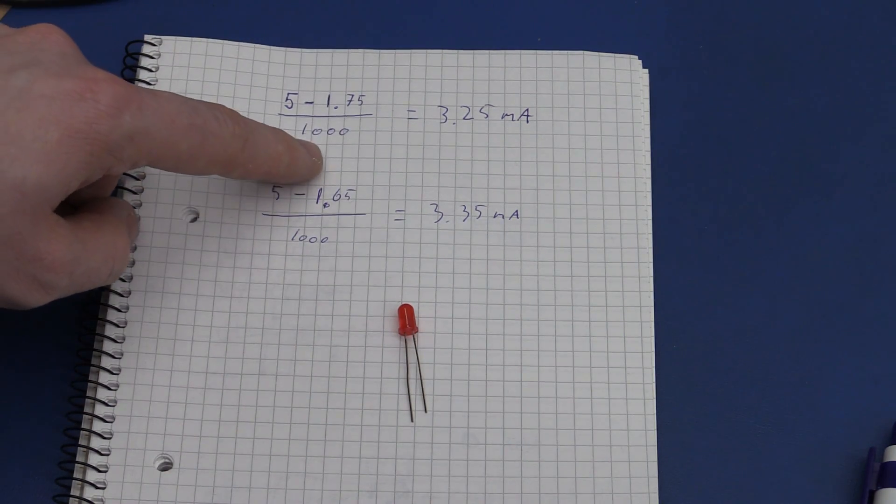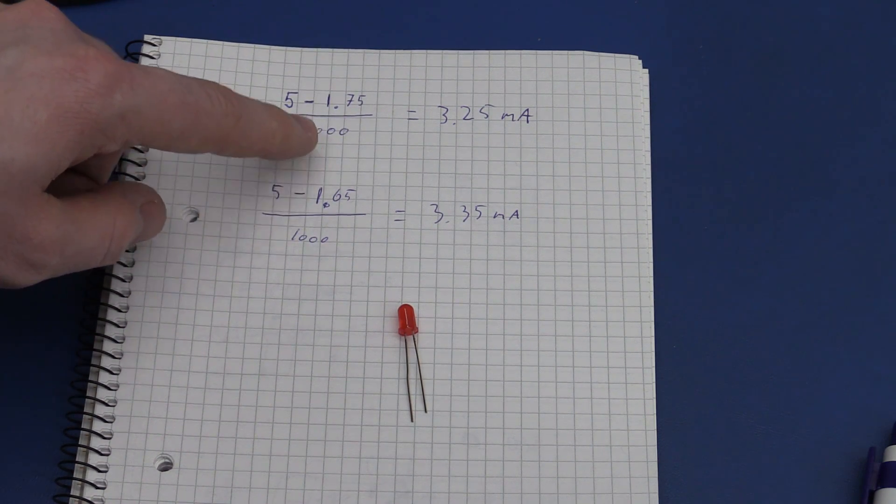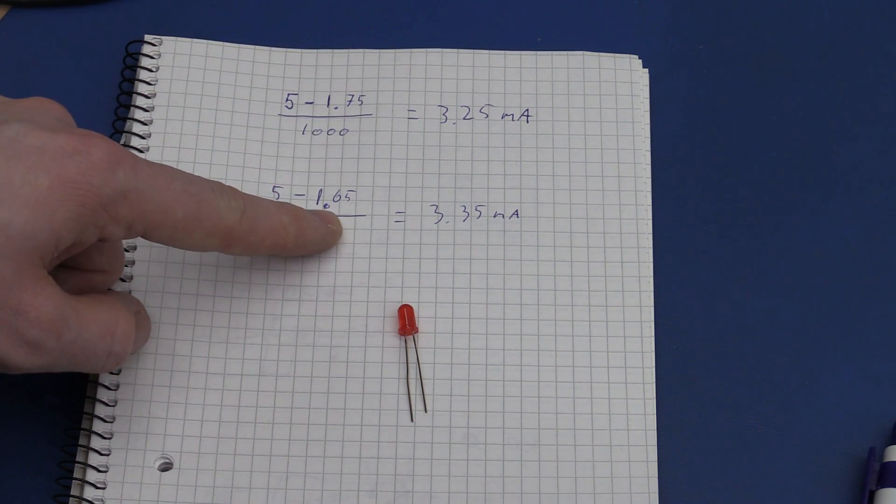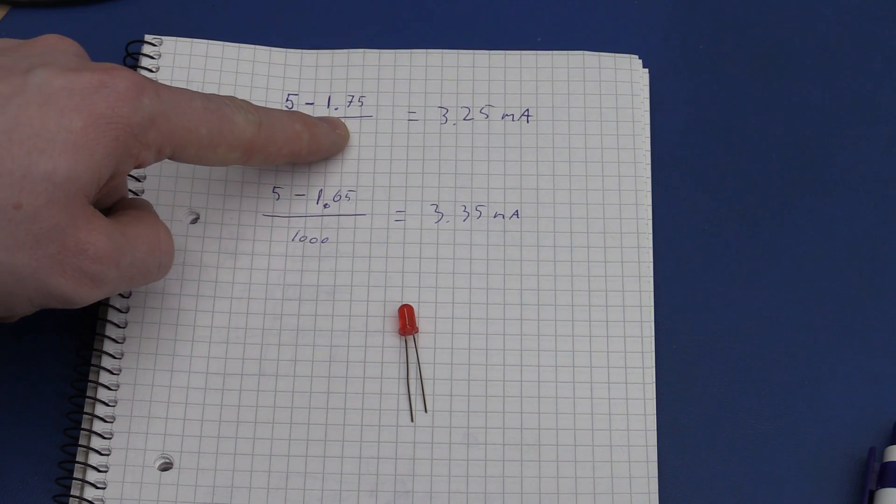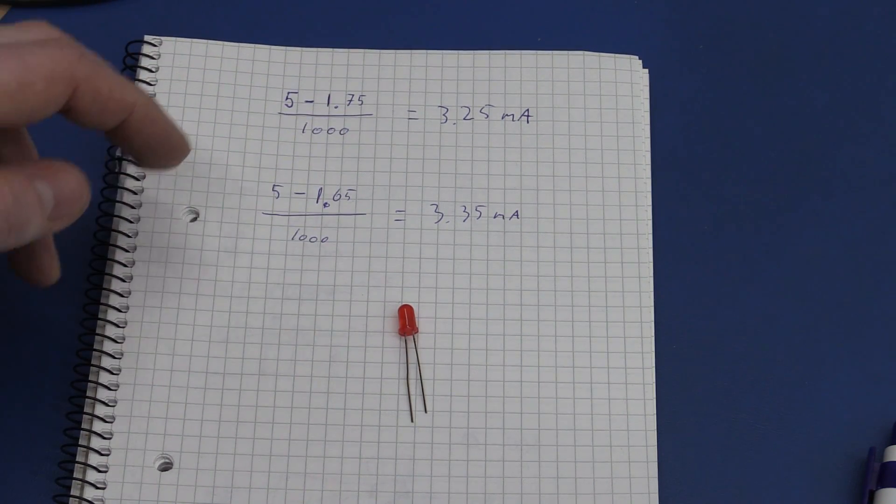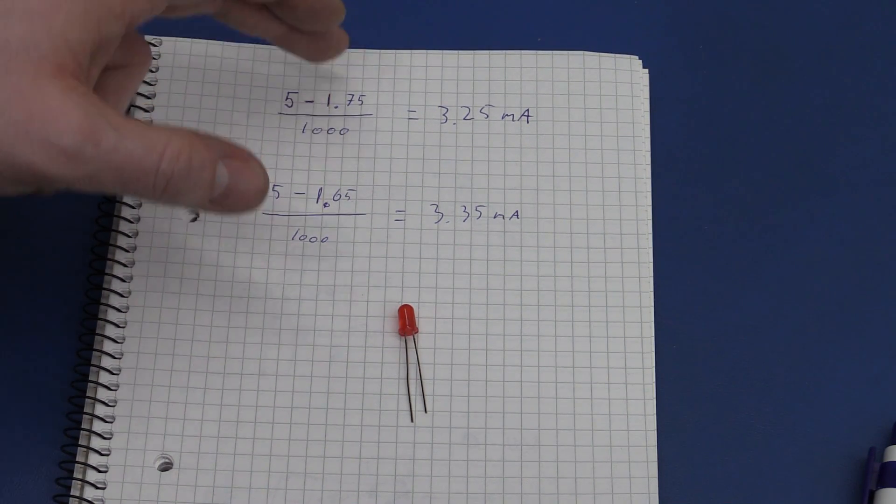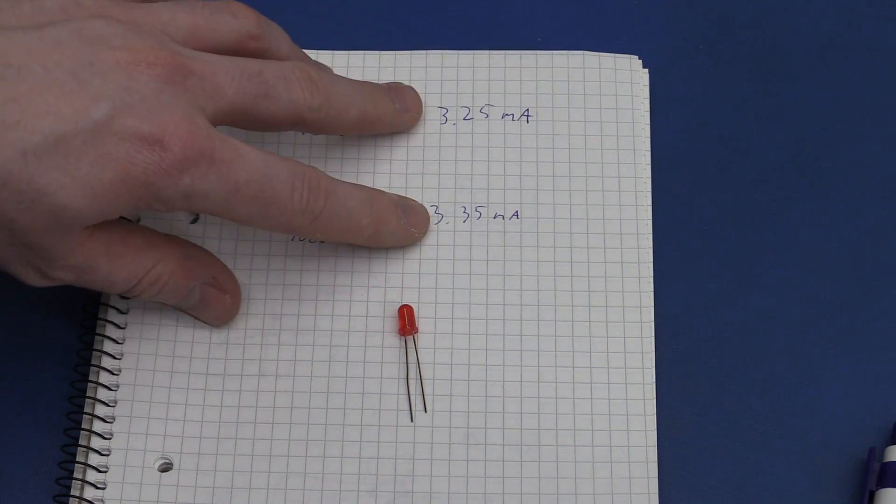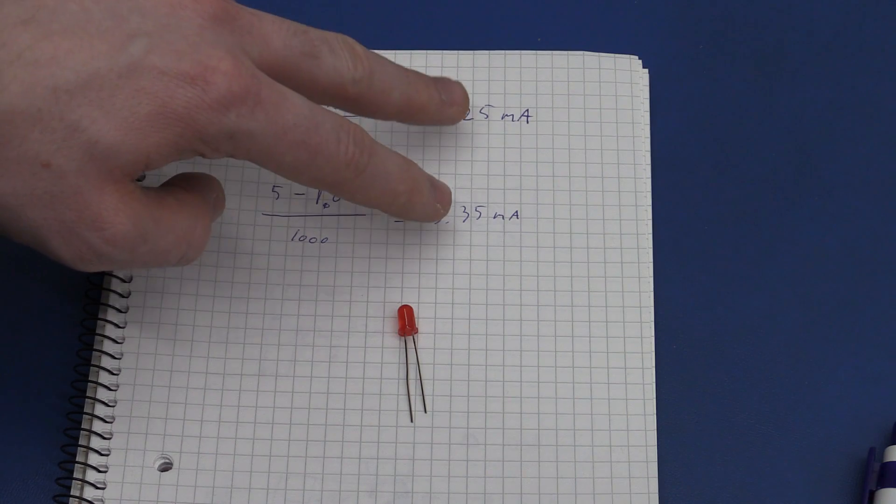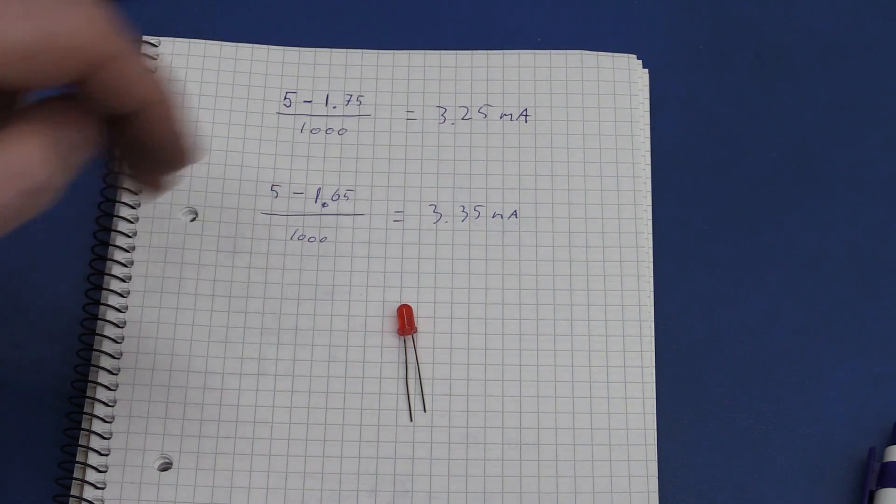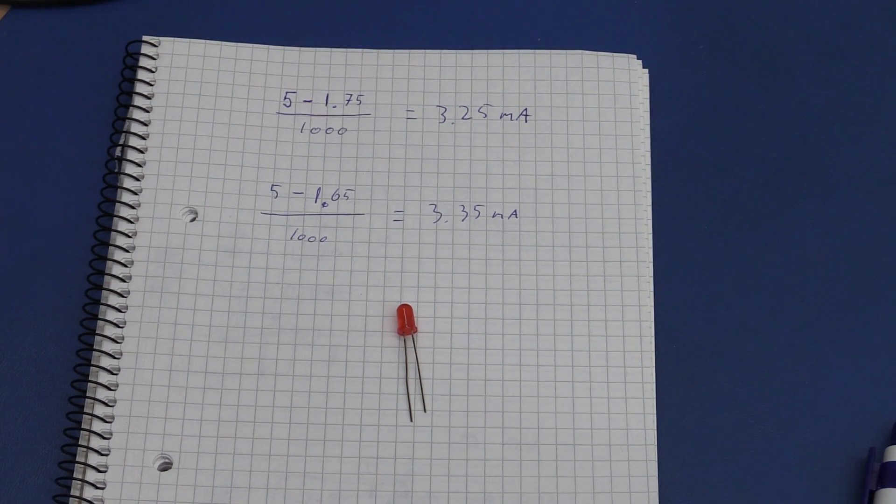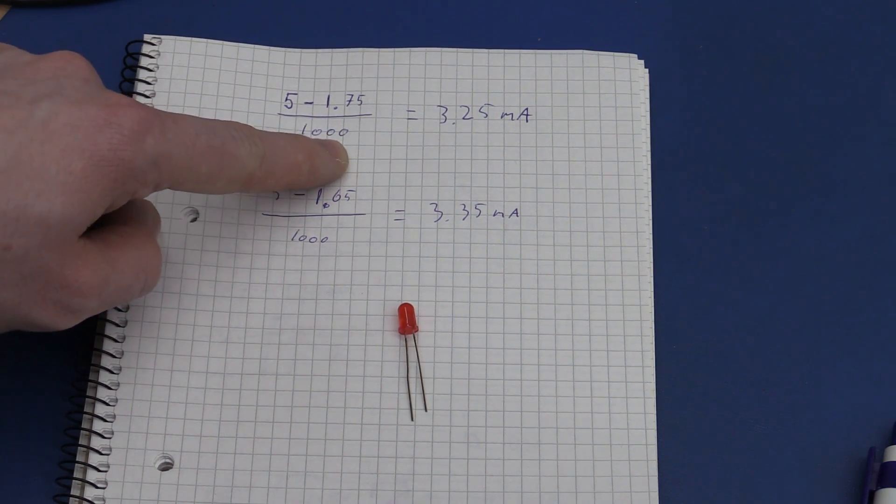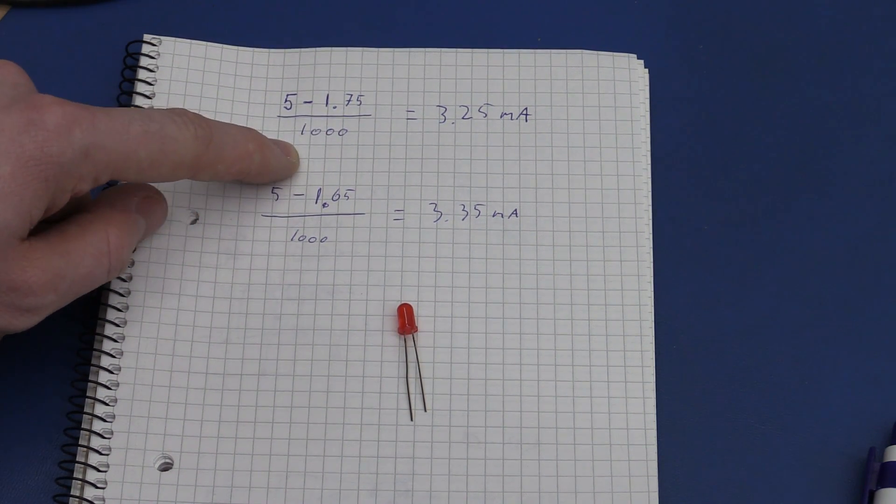So by including a resistor in series you can see even if we change the forward voltage 100 millivolts which was approximately going from room temperature to the maximum temperature. With a 1 kilo ohm resistor it would only change the current by 100 microamps but again as we talked about before then most of the power would be dissipated in the resistor.